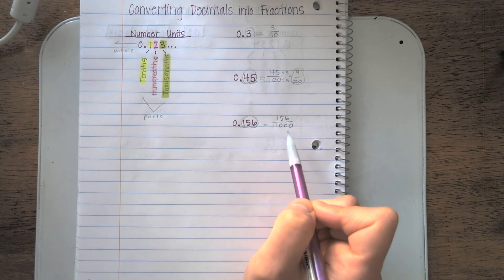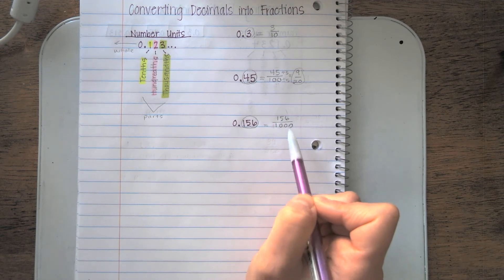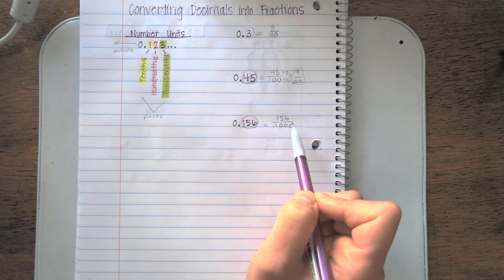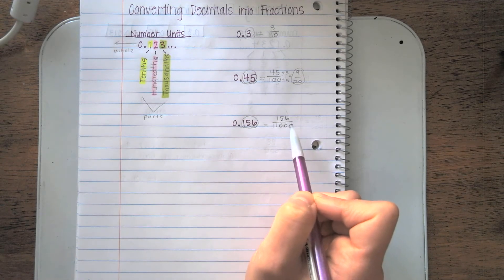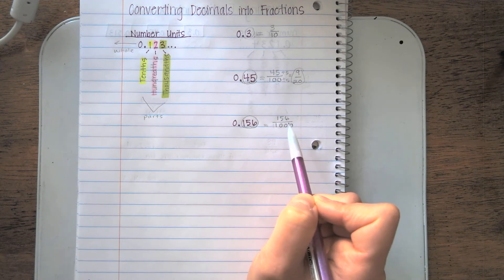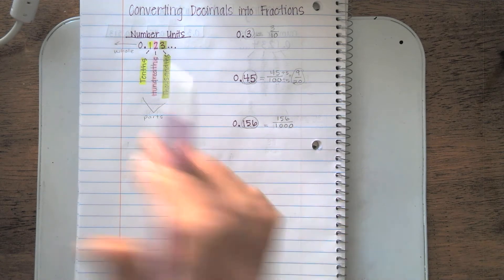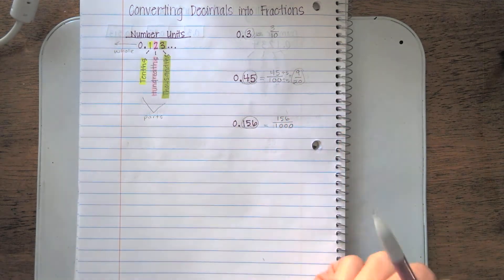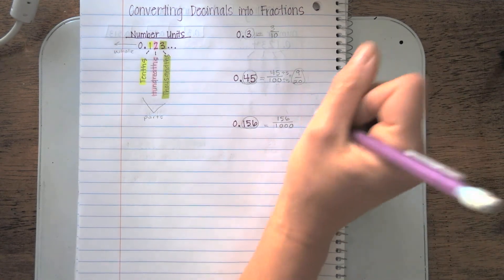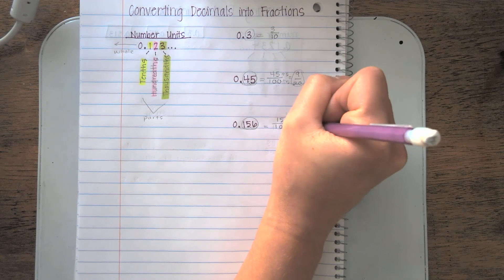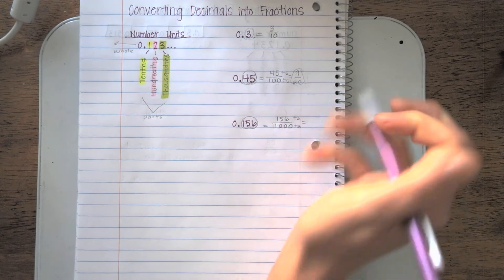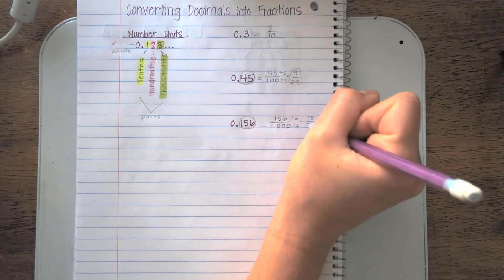I can tell this fraction is not in its simplest form. Both these digits are even, so I know they can at least be divided by 2. Sometimes with really big numbers, it's hard to know if there are bigger common factors you can use. But a good place to start is 2 since they're both even. So 156 divided by 2, and what I do to the numerator, I do to the denominator. When I divide both by 2, I get 78/500.